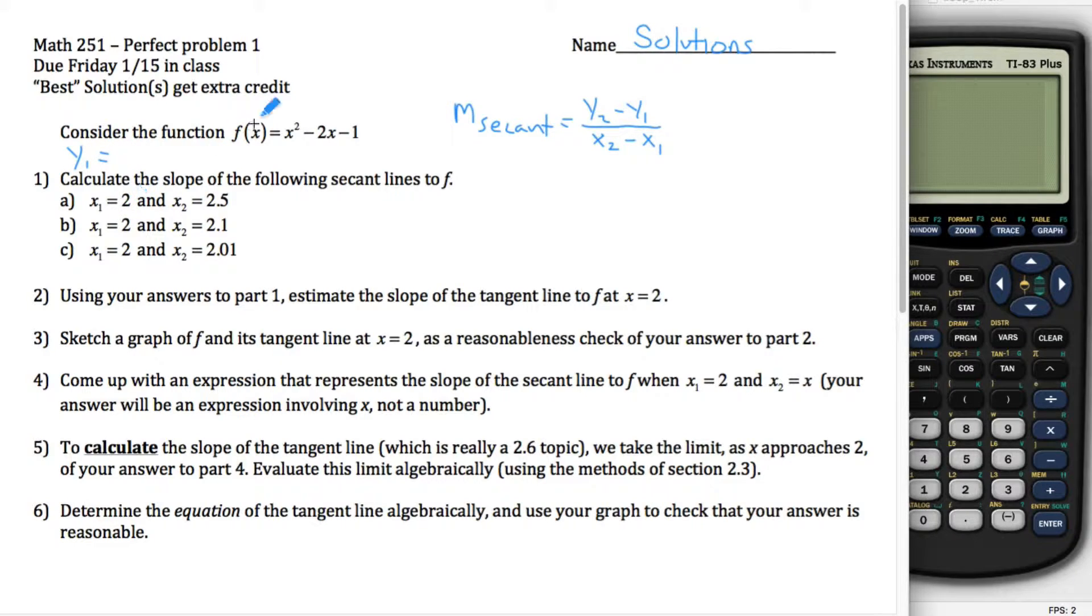To figure out y1, I take 2 and put it into here. In other words, I figure out what is f of 2. I could probably even do that without a calculator. 2 squared is 4 minus 2 times 2 is also 4, 4 minus 4 is 0, minus 1 leaves me with negative 1.